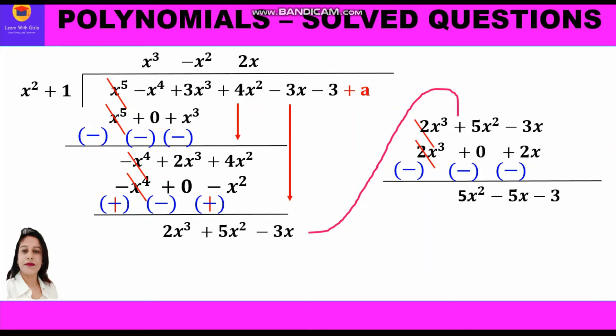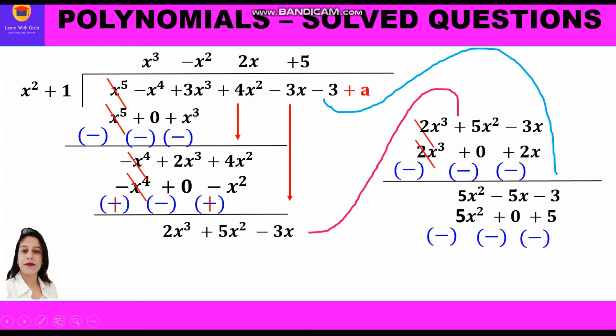Division: divide 5x² by x² to get 5. Multiplication: 5 × x² = 5x², and 5 × 1 = 5, written below like terms (5x² below 5x², +5 below -3, with 0 inserted in between). Subtraction: change signs — 5x² becomes -5x², and +5 becomes -5. 5x² and -5x² cancel; -5x - 0 = -5x; -3 - 5 = -8. Bring down +a.